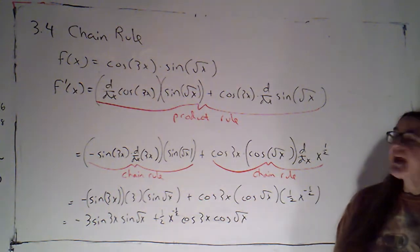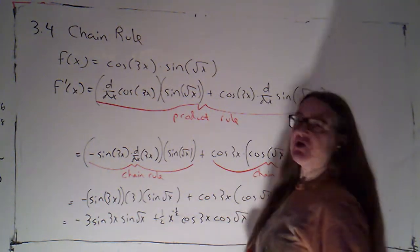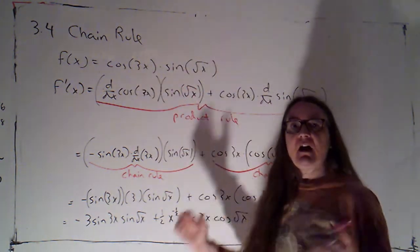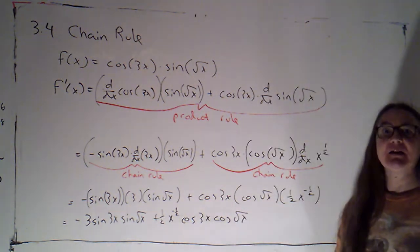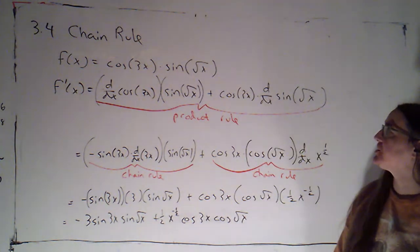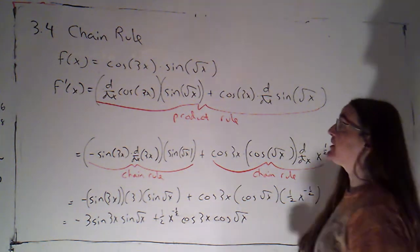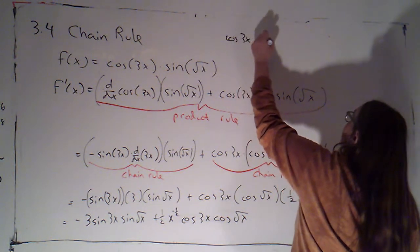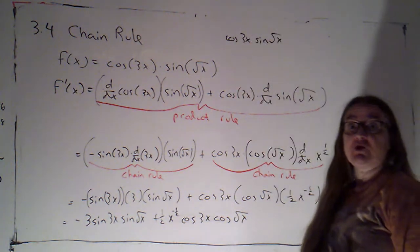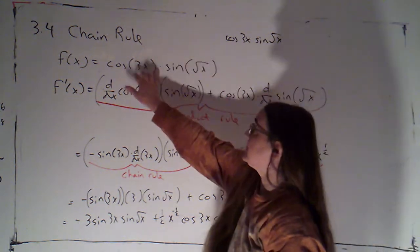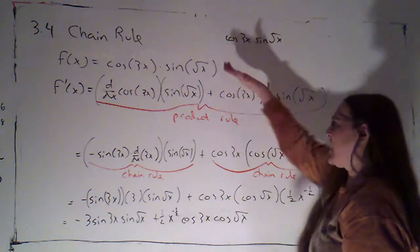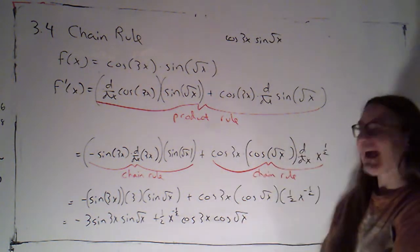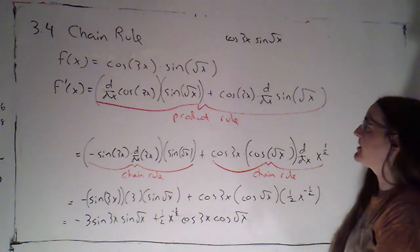Alright, I've got this worked out here on the board. I do want to just mention, having these parentheses around the 3x and the root x sort of highlights that they're the inside part that's being plugged into those functions. But it's not necessary to have those written. So you could write that as cosine 3x sine root x. Often when I'm using the chain rule, I will choose to write in parentheses to make that clearer. As I worked through the problem, I got really tired of writing parentheses. So you'll see that by the end, I'm not writing them around the input to sine and cosine.